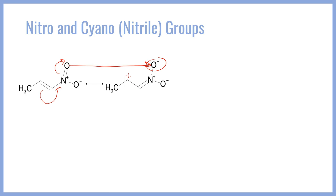And this carbon should be formally positively charged, because you have removed the electron density from this bond here and placed it in this bond with the nitrogen. Notice that the nitrogen and the other oxygen retain the formal charges that they had in the original structure. This resonance structure associated with the nitro group is part of the reason that any compound containing the nitro group is going to have a very strong dipole moment.